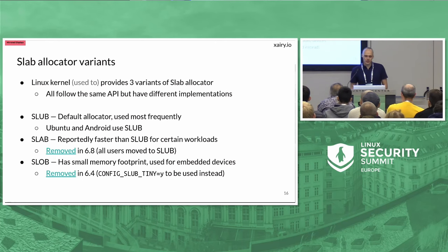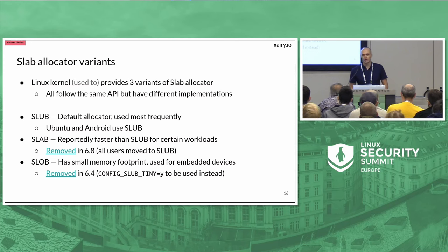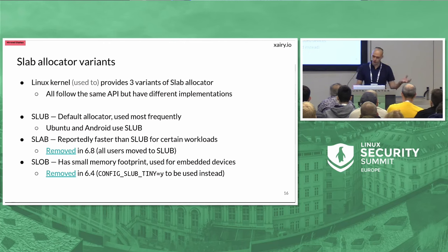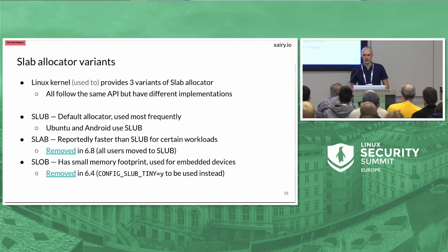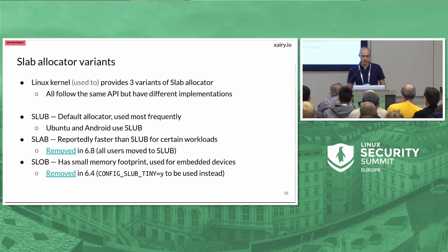The next thing to mention is that technically the slab allocator does not exist as a single thing — there are three different slab allocators within the kernel. In the upstream kernel right now only SLUB is left; everything else was removed. But when you're writing an exploit targeting an older kernel, you might have a different flavor. All three flavors — SLUB, SLAB, and SLOB — follow the same API but have different implementations. For years SLUB was the default, so this is what we're going to focus on.